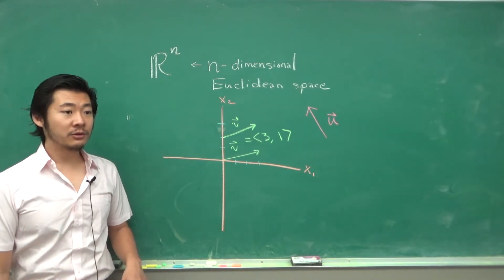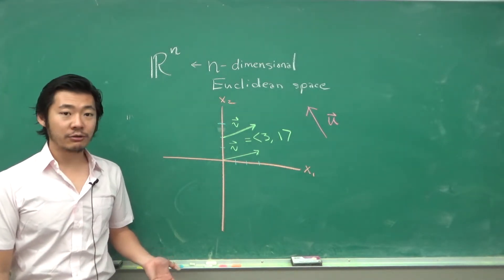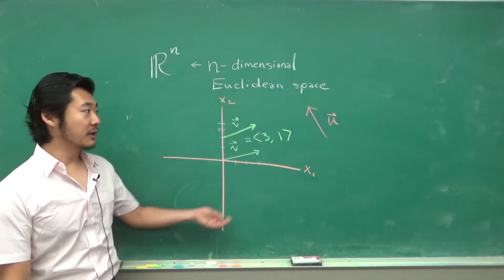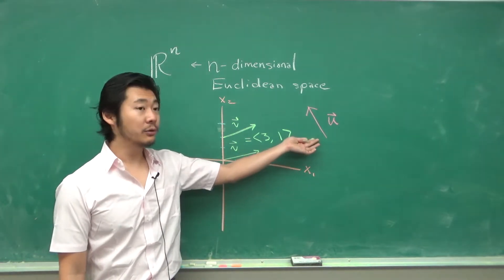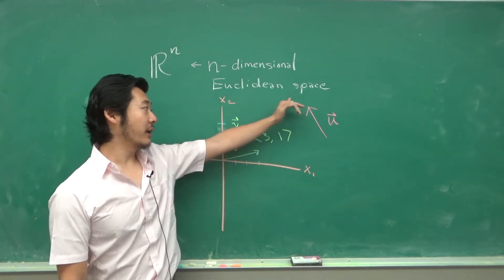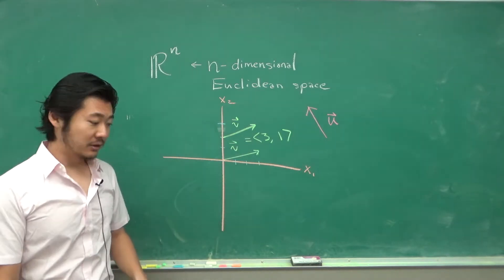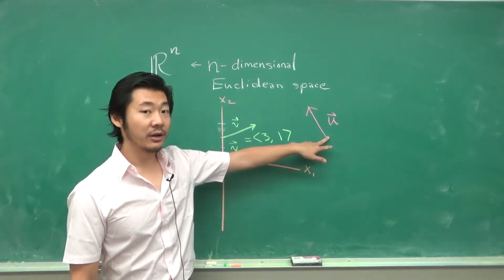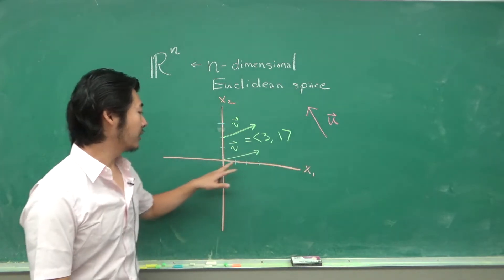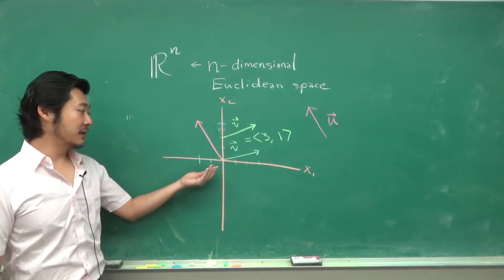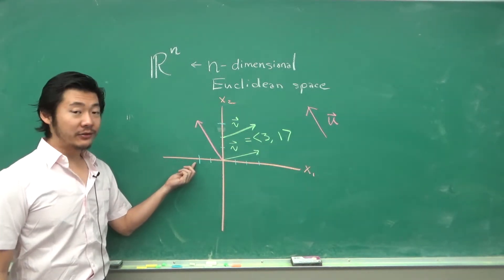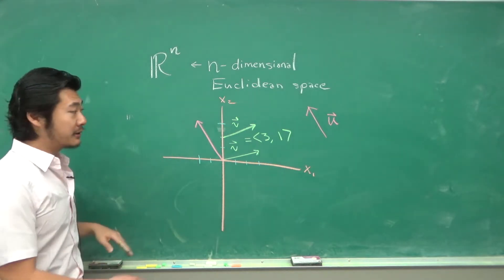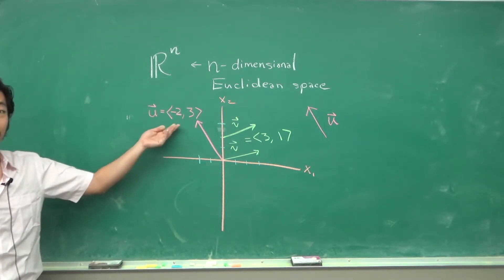So we can use Rn to describe all n-dimensional vectors. For instance, this two-dimensional vector u can be described in R2 by placing the starting location at the origin. We can see that since this goes two units to the left in x1 and three units up, u is described as the vector negative 2, 3.